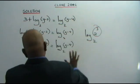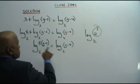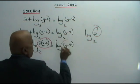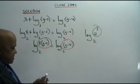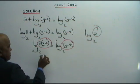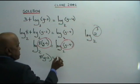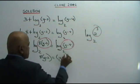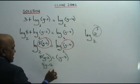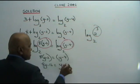Now you do comparison. Since both sides have log base 2, we equate the arguments: 8 times (Y minus 2) equals Y minus 4. Opening the brackets: 8Y minus 16 equals Y minus 4.